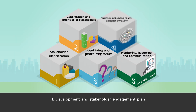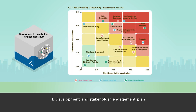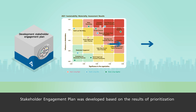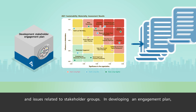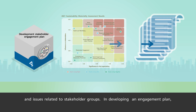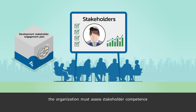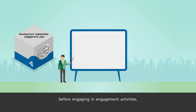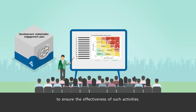Step 4: Development of the Stakeholder Engagement Plan. The Stakeholder Engagement Plan is developed based on the results of prioritization and issues related to stakeholder groups. In developing an engagement plan, the organization must assess stakeholder competence before engaging in engagement activities, such as understanding the topic of participation activities, to ensure the effectiveness of such activities.